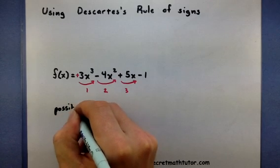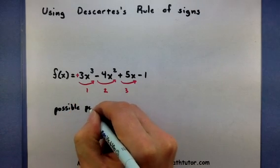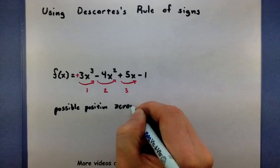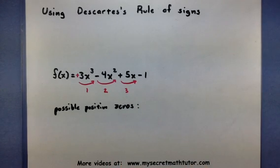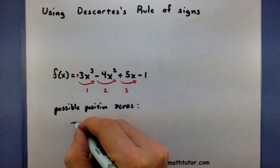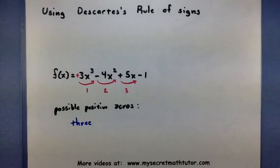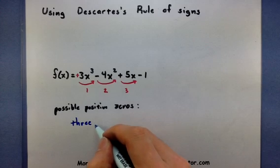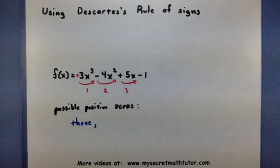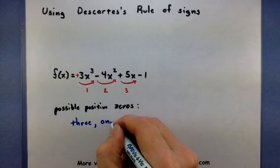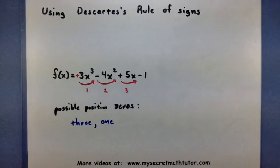So possible positive zeros. Well, according to this rule, here's what it says, that we might have three of them, since that's the number of sign changes we have, or it could be less than three by an even number. So think of taking three and dropping it down by two. Maybe it just has one positive zero.